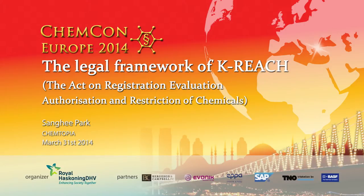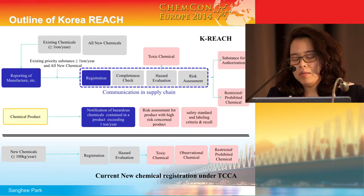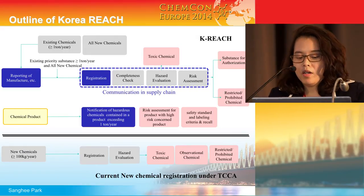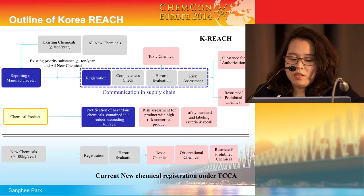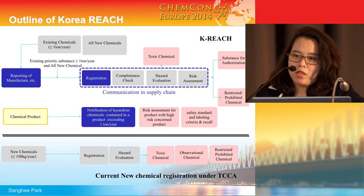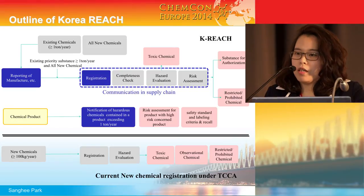This is the whole picture of K-REACH. K-REACH regulates chemicals at the substance level and at the same time the product level. In view of the substance, there are mainly three requirements: annual reporting, registration, and communication in supply chain. The reporting, registration, and communication requirements apply to both new chemicals and existing chemicals.